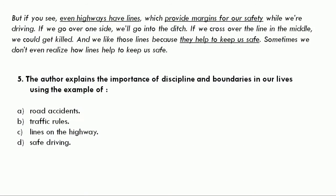Question 5: The author explains the importance of discipline and boundaries in our lives using the example of A. Road accident, B. Traffic rules, C. Lines on the highway, or D. Safe driving. If you read the text again, you will understand that the author explains the importance of discipline using C: lines on the highway. So the correct answer is C: lines on the highway.